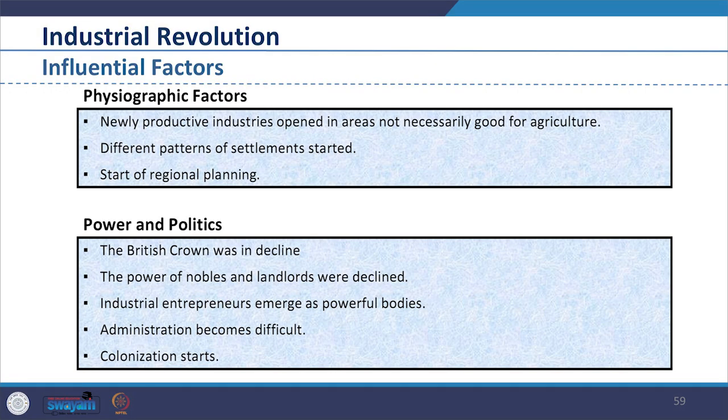Looking at the physiographic factors, newly productive industries opened in areas suitable for agriculture. Since people started moving and settling near their workplaces, this initiated growth in different patterns of settlements, thus regional planning also started. There was also change in power and politics — as industries boomed, industrial entrepreneurs emerged as powerful bodies. British power started to decline, including the power of nobles and landlords, as administration became difficult, hence colonization started.